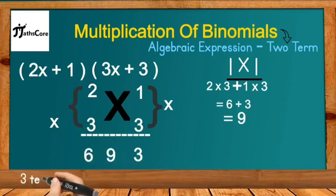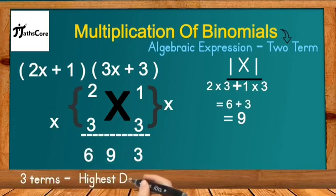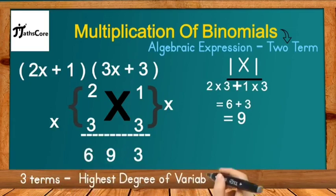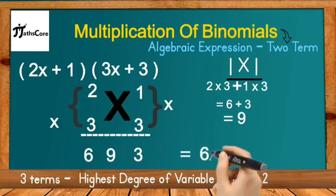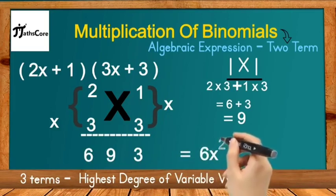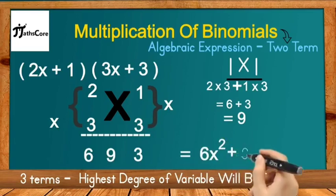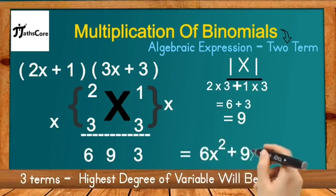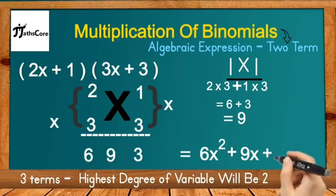Now we need to write this in the form of a polynomial. We have three terms — 6, 9, 3 — so the highest degree of the variable will be 2. We write this as 6x² + 9x + 3, where 3 is a constant.